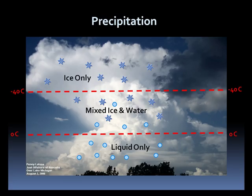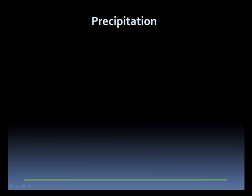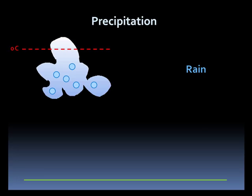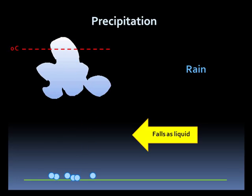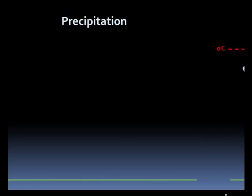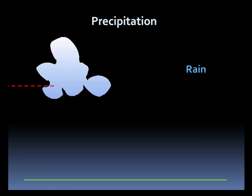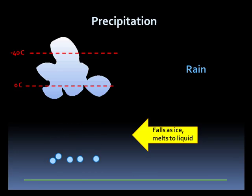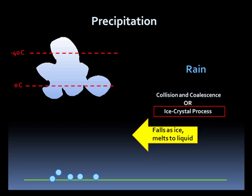Now let's see how different types of precipitation develop. Here we have a cloud where it is almost entirely all in liquid form. The cloud drops get big enough to fall as rain. Would this process be collision coalescence or the ice crystal process? If you said collision coalescence, you're right. Now in this cloud, the freezing level is at the bottom of the cloud. Ice crystals fall out of the cloud but melt on their way to the surface, reaching the ground as rain. Would this be collision coalescence or the ice crystal process? If you said ice crystal process, you are correct.